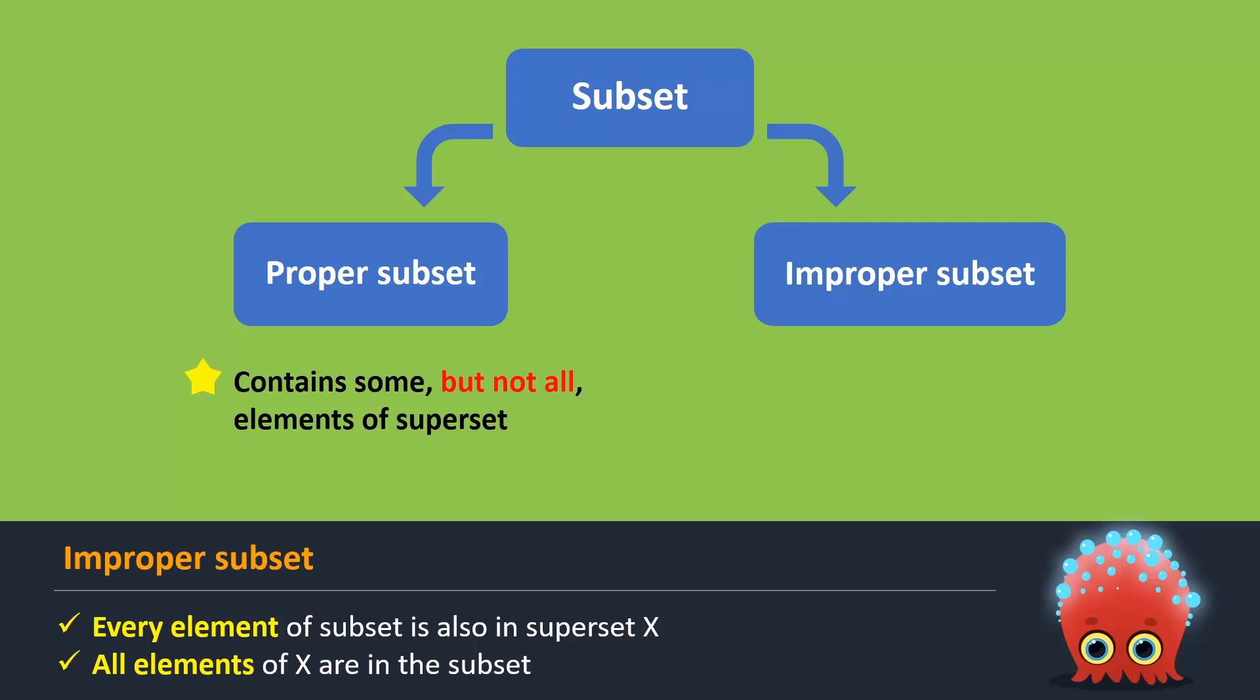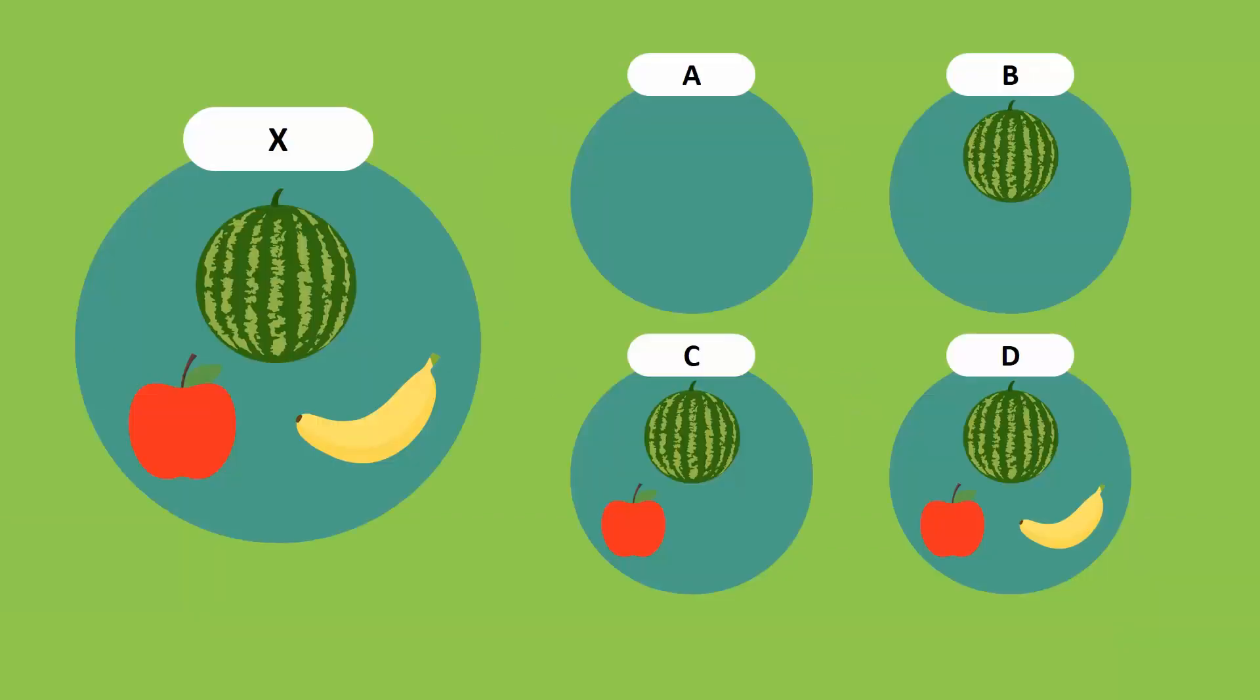In other words, an improper subset contains all the elements of the superset. Here, since subset D contains all the elements of set X, it is an improper subset of X.